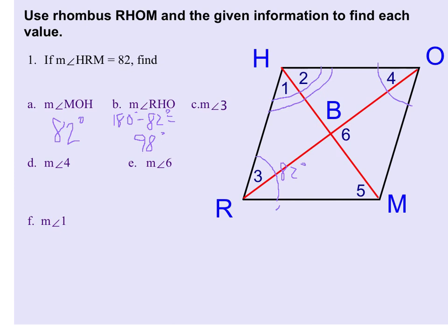Moving on to find the measure of angle 3. We can figure this out because we just learned that in a rhombus, the diagonals bisect the opposite angles. So that means 82 degrees is being bisected by this diagonal. So I can find the measure of angle 3 by taking 82 degrees and dividing it by 2, and we get 41 degrees.